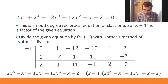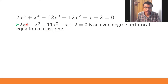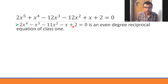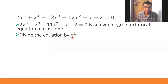My next task is to factorize 2x⁴ - x³ - 11x² - x + 2. This is an even-degree reciprocal equation of class 1 — degree 4 (even), coefficients of x⁴ and constant match, x³ and x match, and the leading coefficient is positive (class 1). The standard procedure is to divide this equation by x².